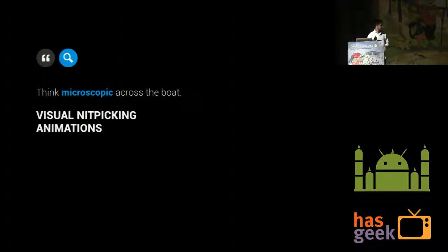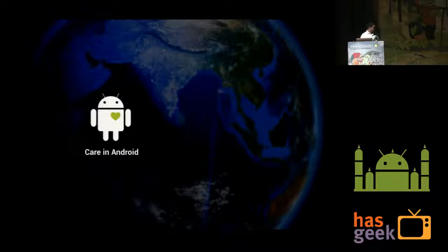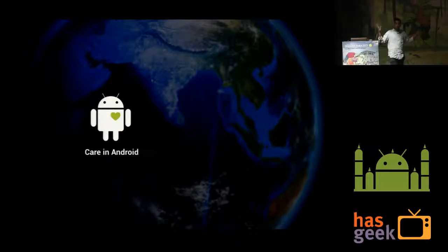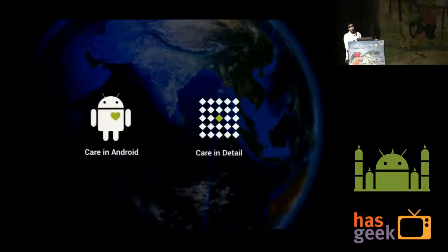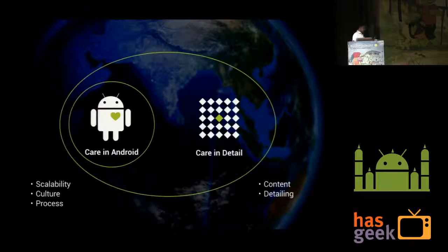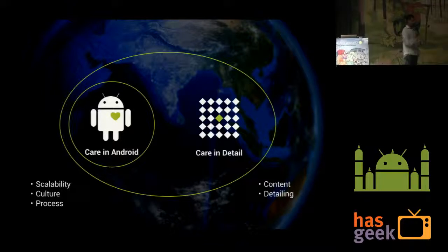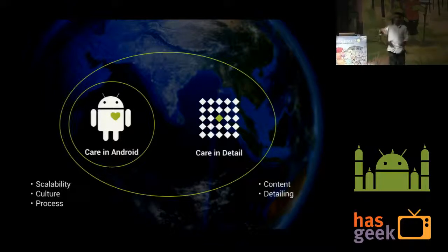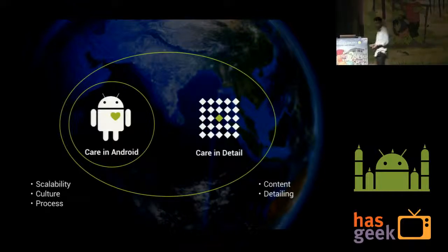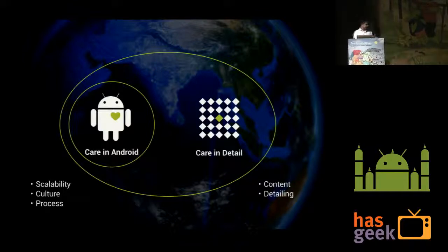Having said all of that, I'd like to wind up. First we spoke about care in Android, which is basically helping everyone think holistically of the platform, and then seeing how these principles apply to how you can actually design and step it up a notch in details. One sort of encompasses the other — initially you need the basic design principles like scalability and working for a specific culture, but then you add the other layer of detail, because that's what actually differentiates what you're creating from everything else. I hope these stories shed some light into helping everyone make meaningful and compelling ideas come to life.